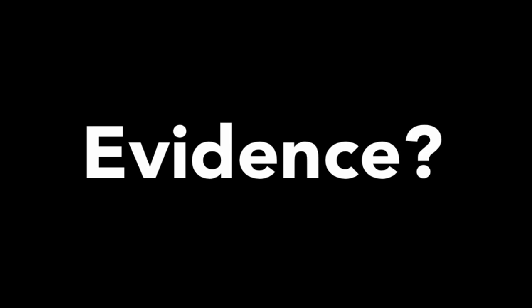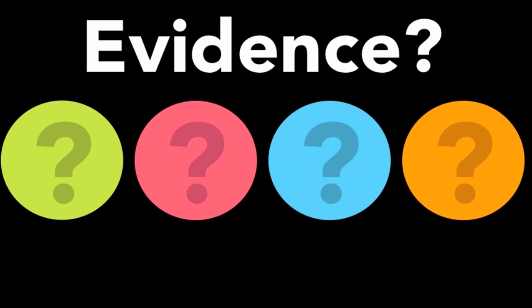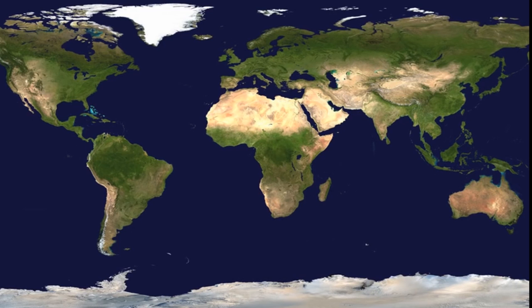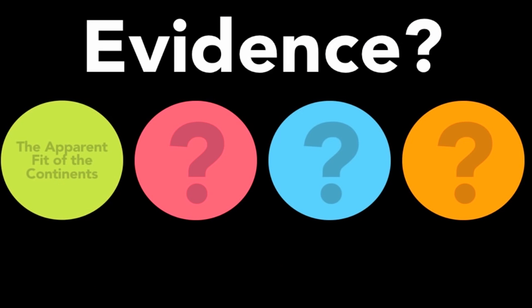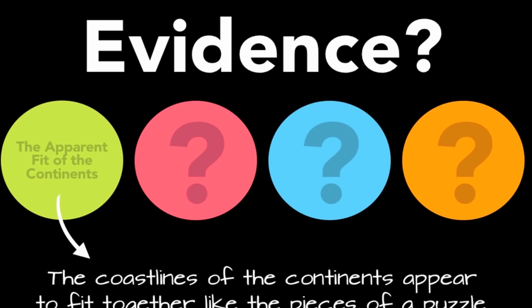Now people thought Wegener was a little bit nutty. And so he knew that if he was going to make any headway with this idea, he had to come up with evidence. We're going to take a look at four pieces of evidence that Wegener put together to prove to the public that the continents had in fact drifted. The first piece of evidence we've actually already discussed — it's simply the observation that the continents appear to fit together. Wegener didn't believe that this could be simply a coincidence. This becomes evidence number one: the apparent fit of the continents. Essentially the coastlines of the continents appear to fit together kind of like the pieces of a puzzle.